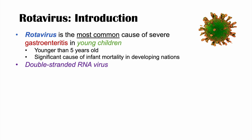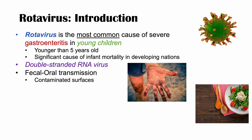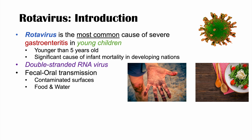Rotavirus is a double-stranded RNA virus, and it is transmitted via the fecal-oral route, like many different infectious diseases. You can see this on contaminated surfaces, like dirty hands and other dirty surfaces. If someone has a contaminated hand and they touch a table, they can contaminate the table as well. It can also be in food and water, although this is rare.